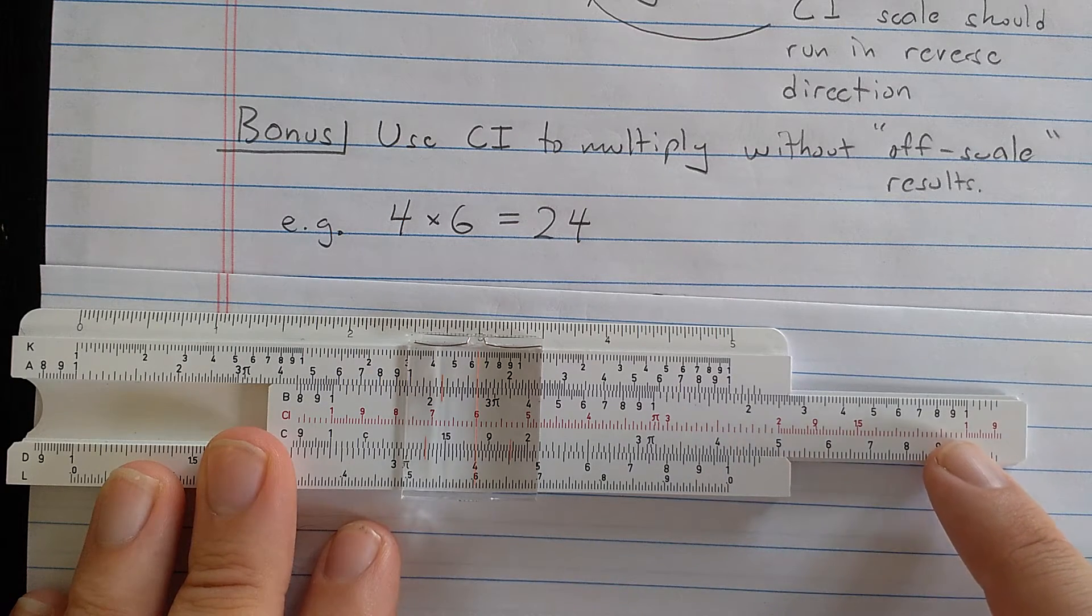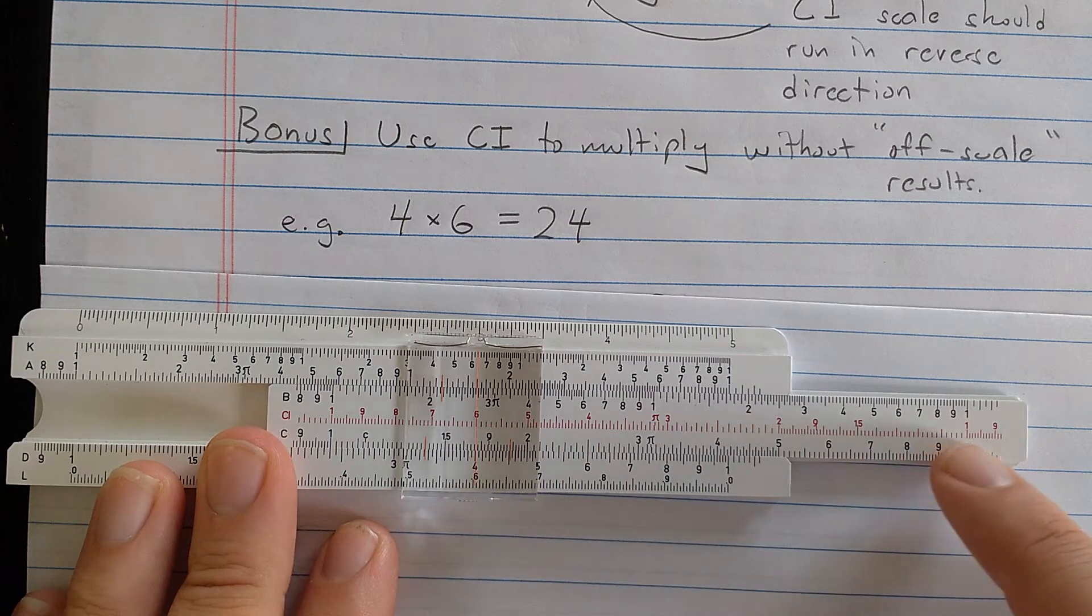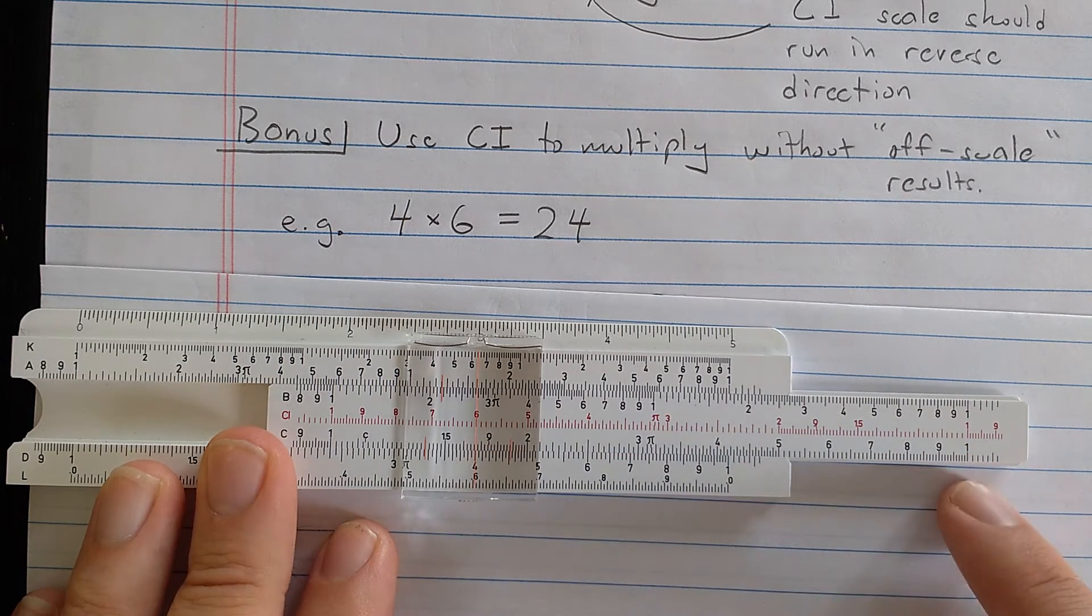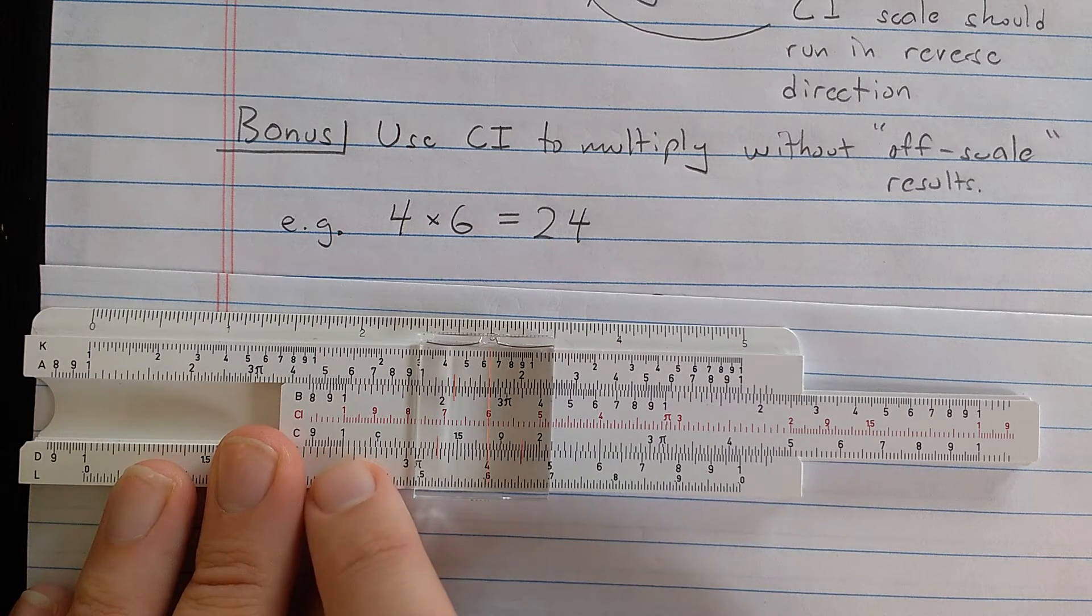But you see, if you look at the CI scale, see here 1 and 6. The distance from 1 to 6 on the CI scale is this. So the result should be here, distance from 1 to 6. But that 1 is the same as this one, right? So the result is there.